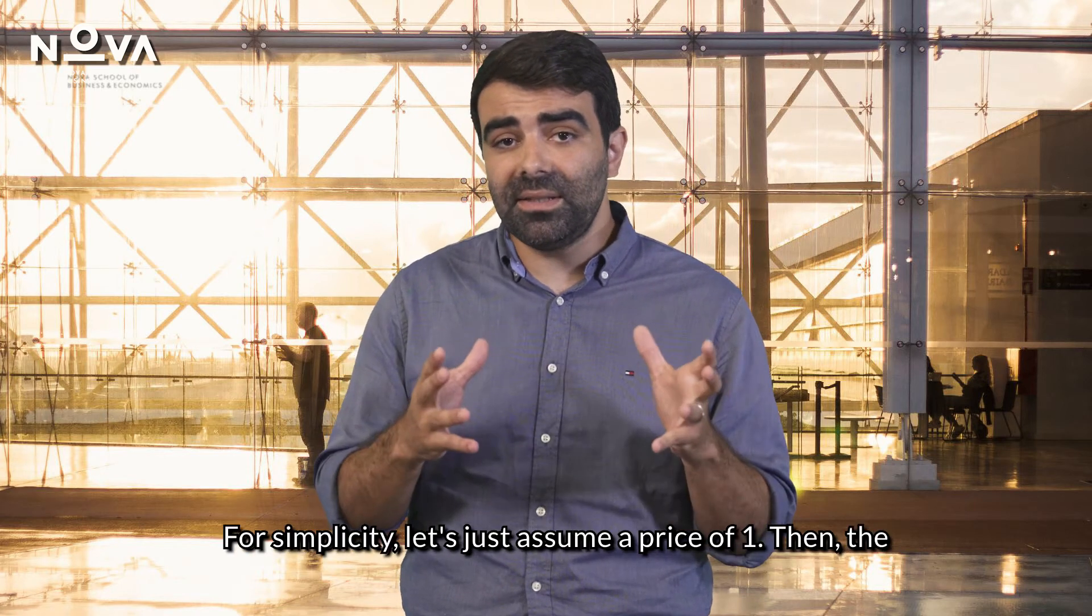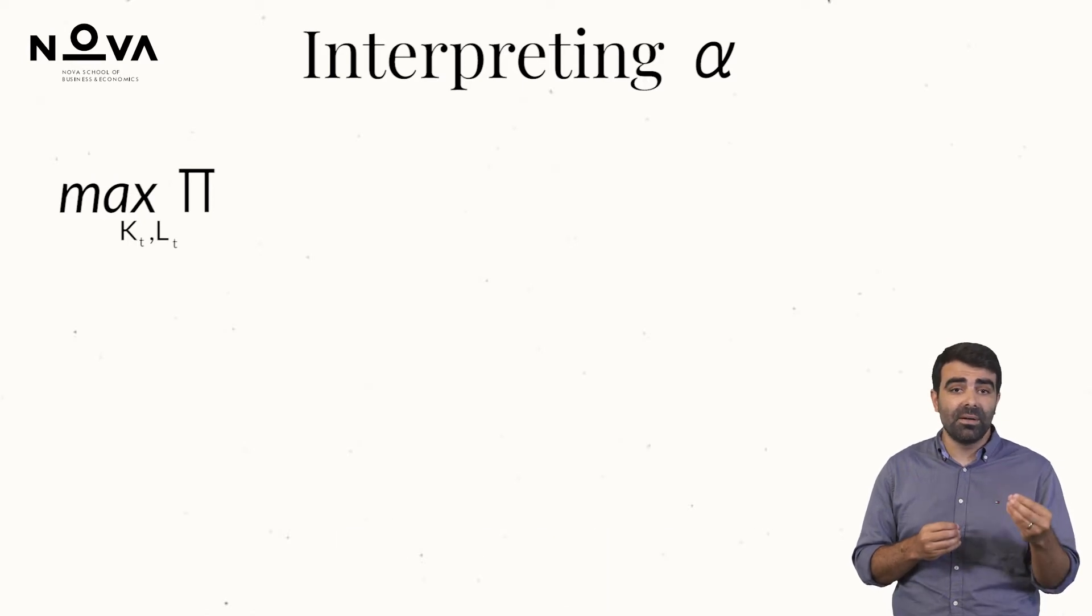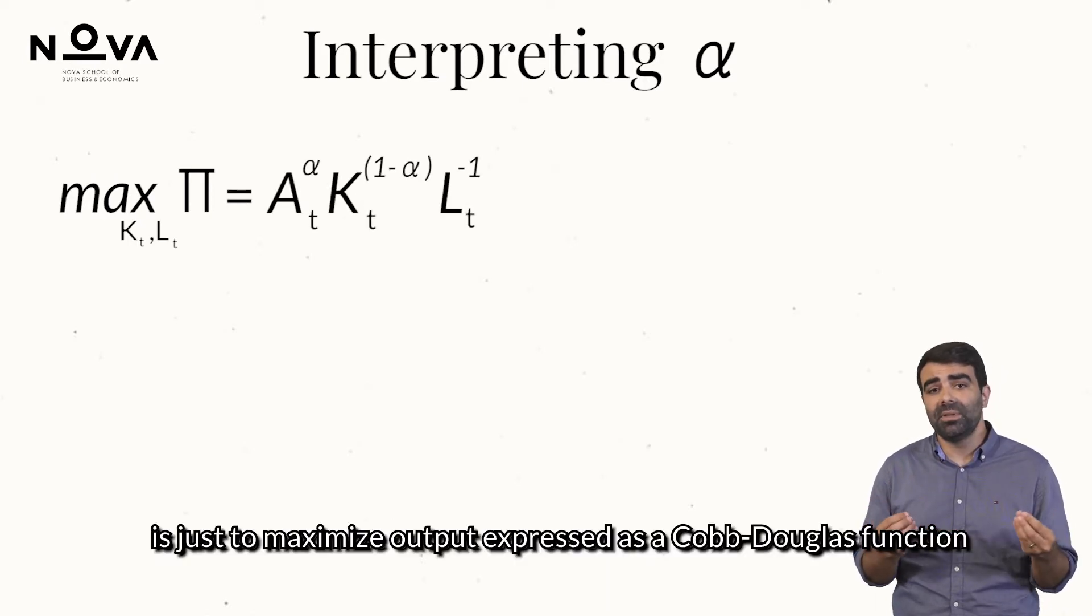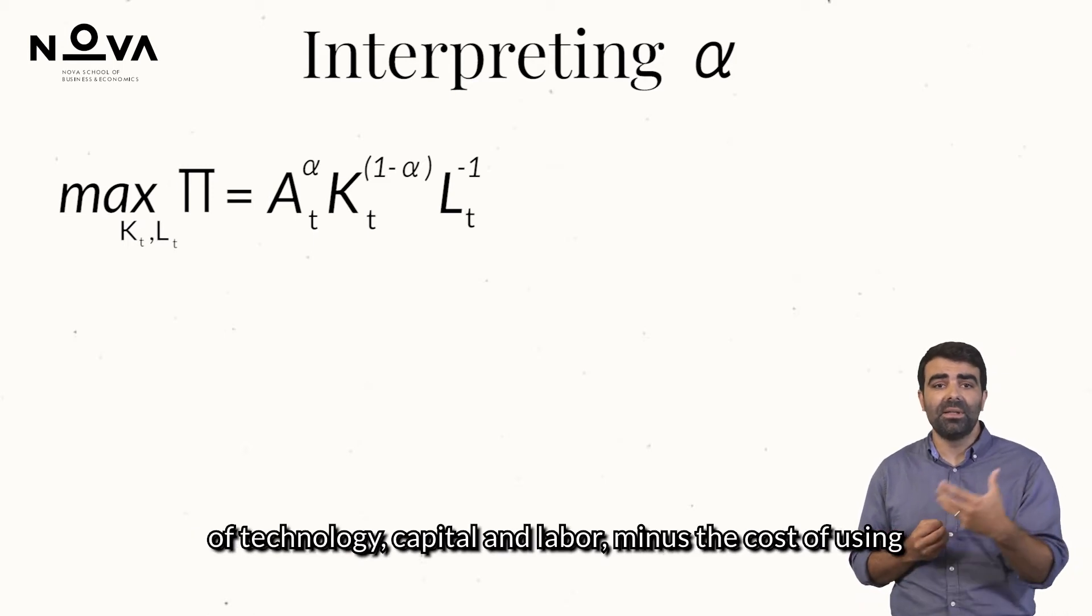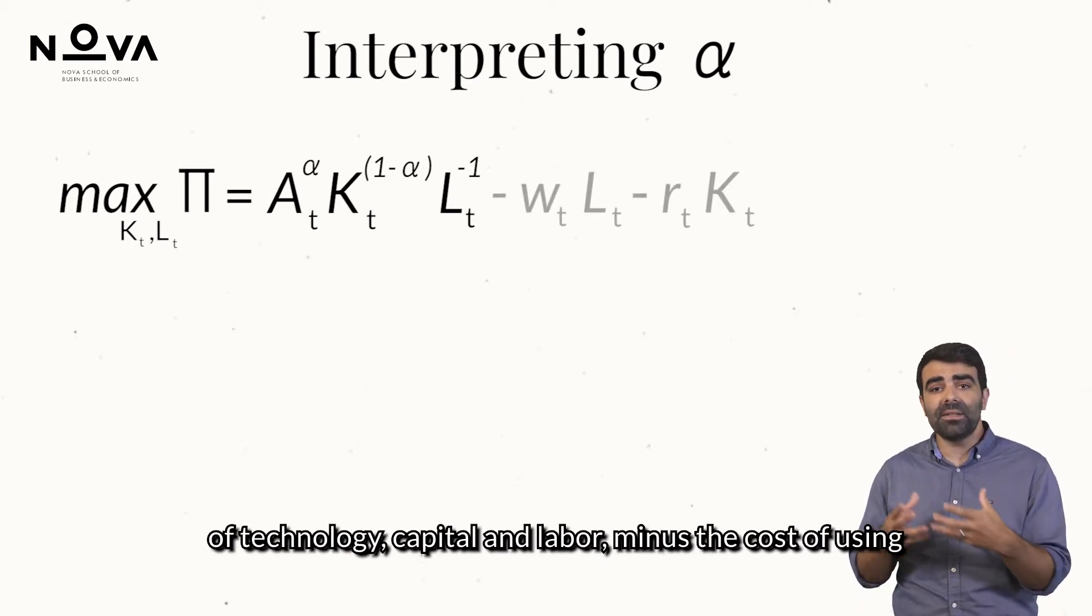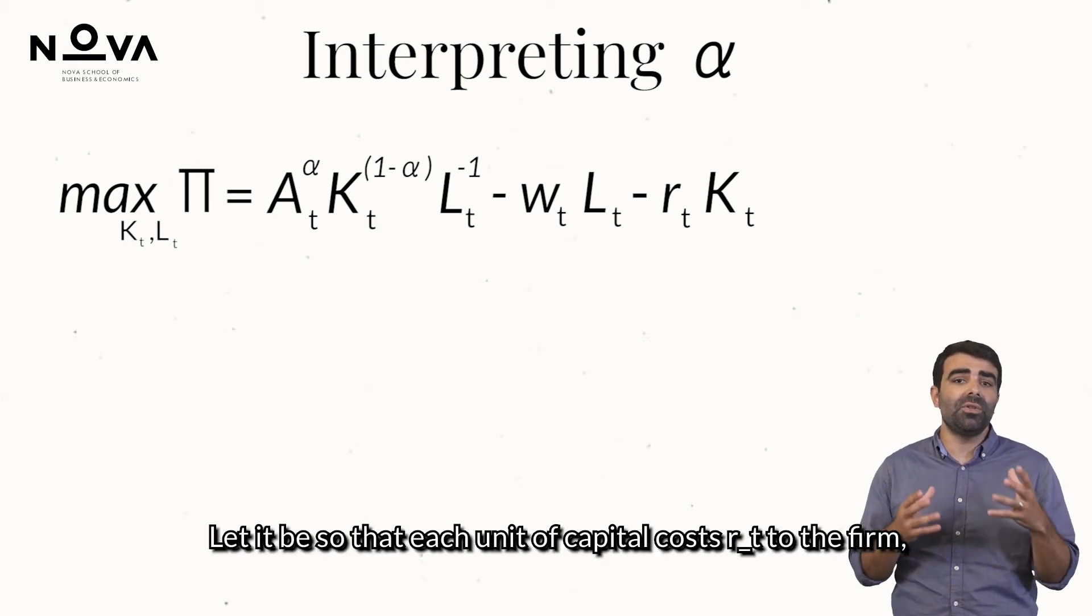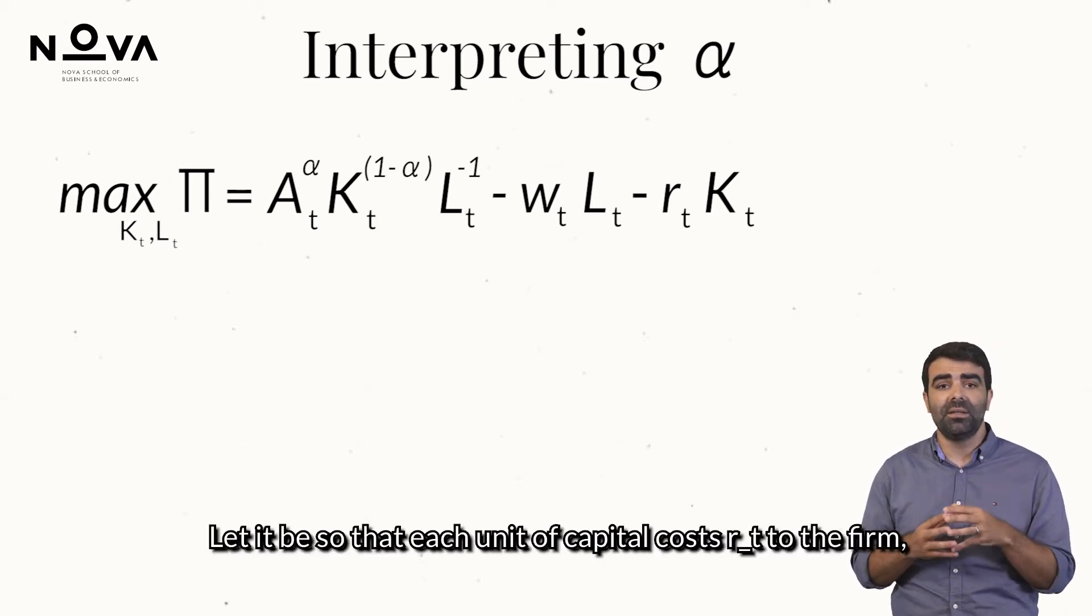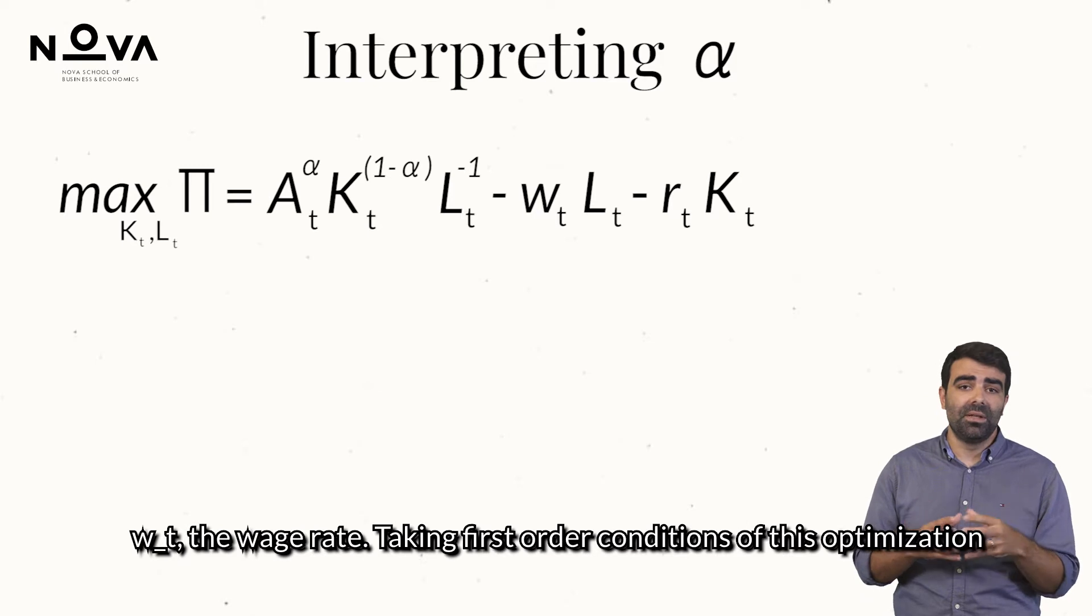Profits are given by price times quantity. For simplicity, let's just assume a price of 1. Then the maximization problem for the firm is just to maximize output expressed as a Cobb-Douglas function of technology, capital, and labour minus the cost of using capital and labour. Let it be so that each unit of capital costs RT to the firm, the rental price of capital, and each unit of labour costs Wt, the wage rate.